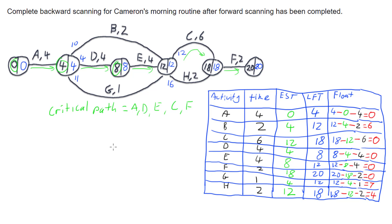And that's it — that is critical path analysis. You do forward scanning, then backwards scanning, identify the critical path, and work out when things can start, when they have to finish by, and how much delay is allowable for each activity.